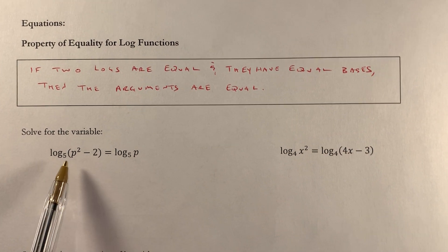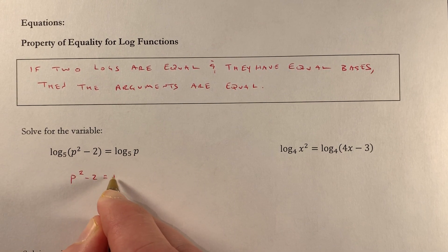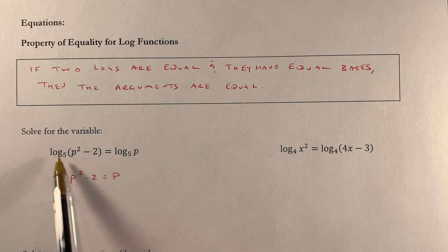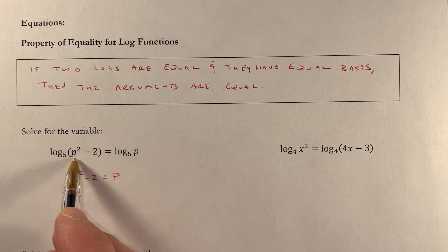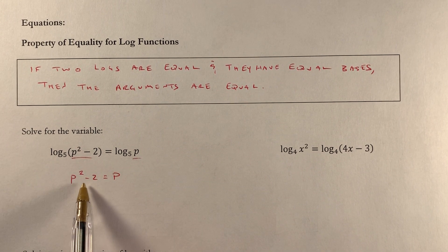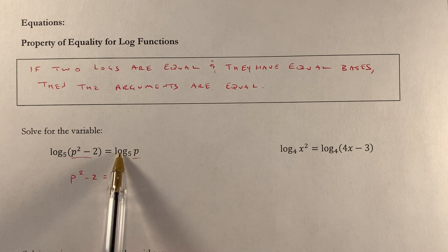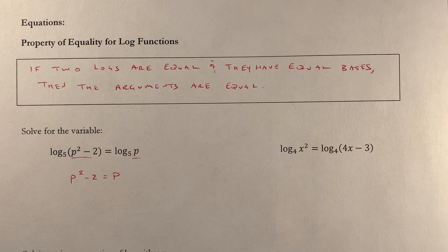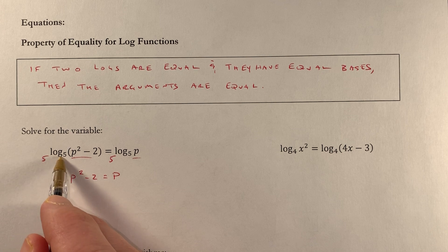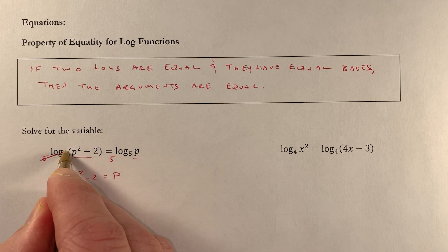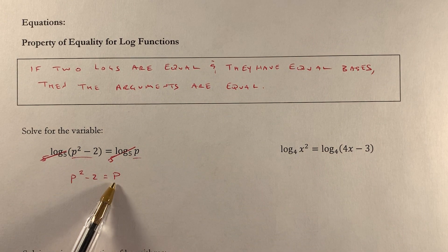That means p squared minus 2 is equal to p. I've got two logs set equal to each other with equal bases, so the two arguments are equal: p squared minus 2 equals p. What I can do is raise base 5 on both sides — 5 to this power equals 5 to this power — and the 5 and log base 5 cancel on both sides, giving p squared minus 2 equals p.